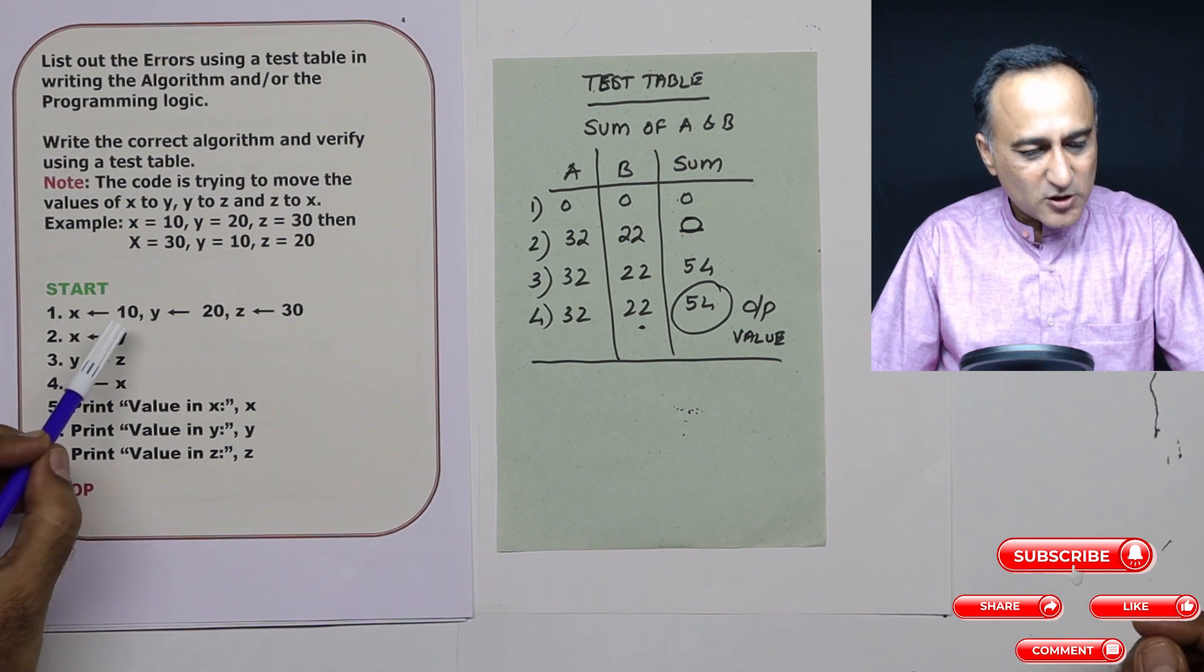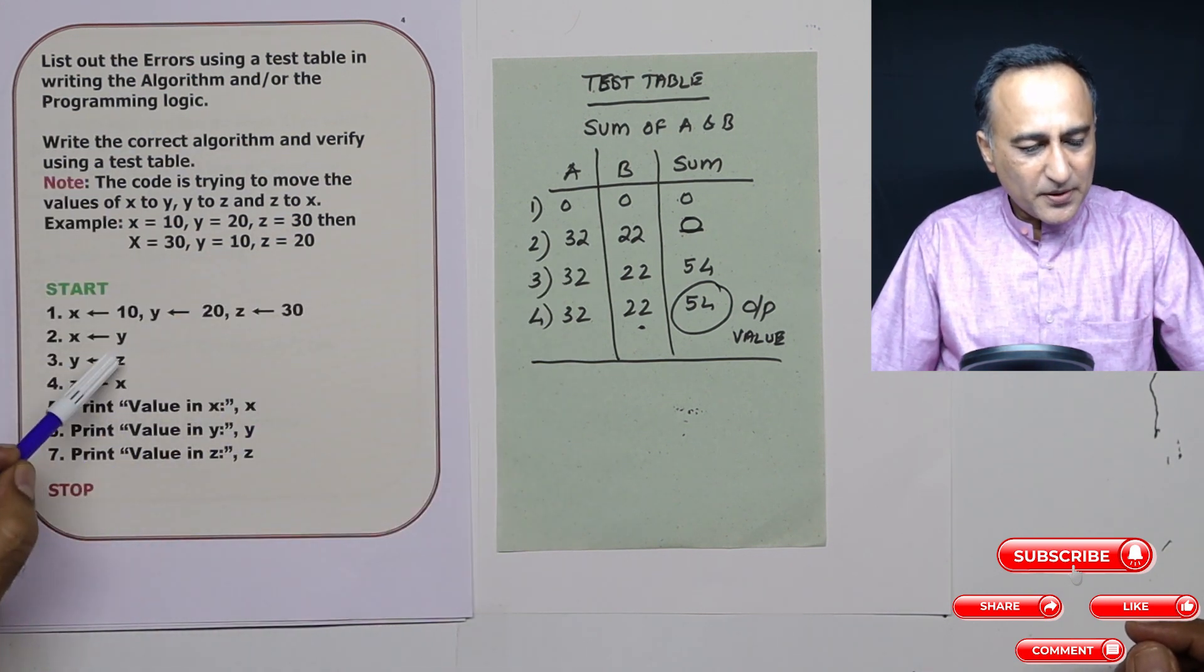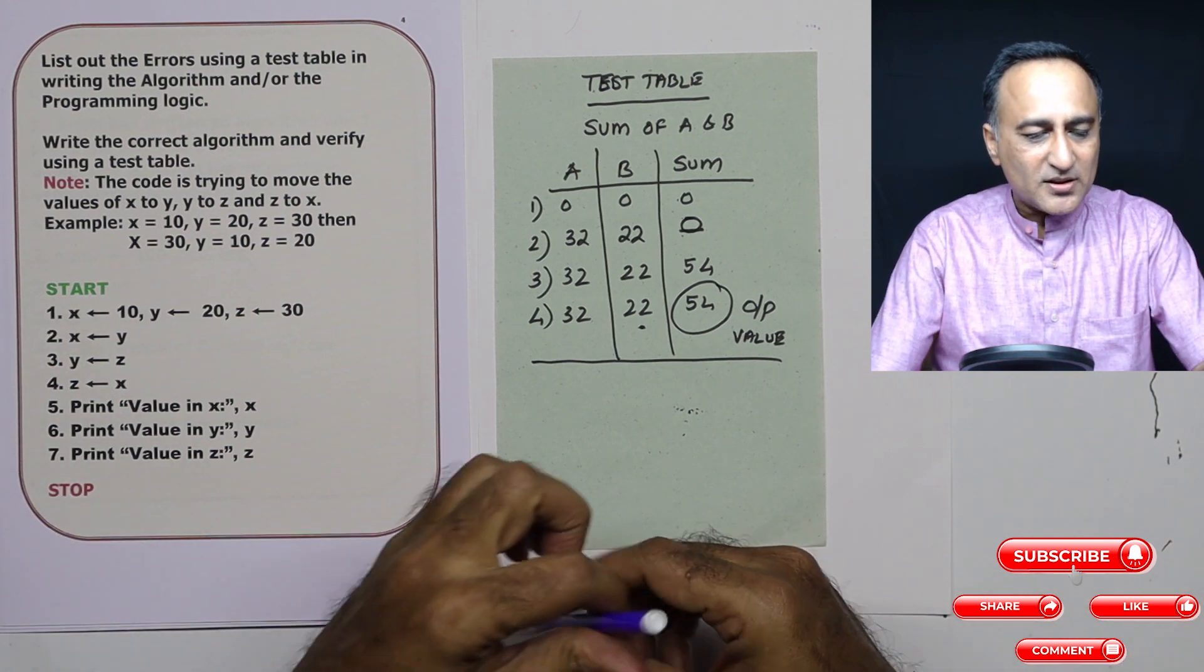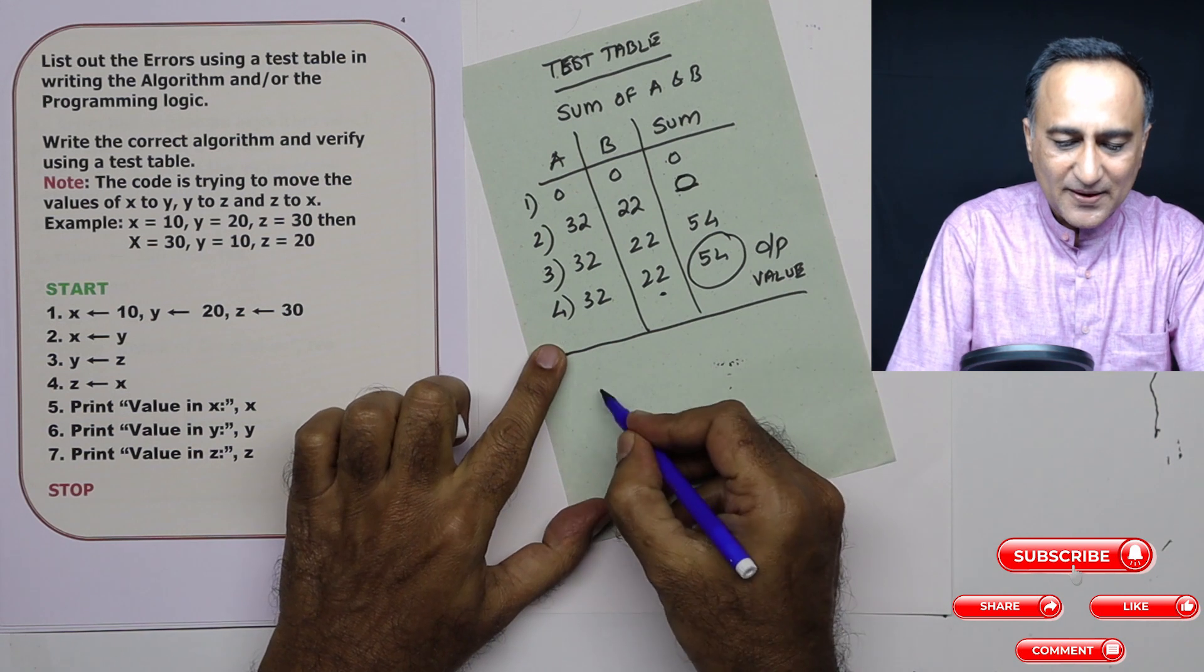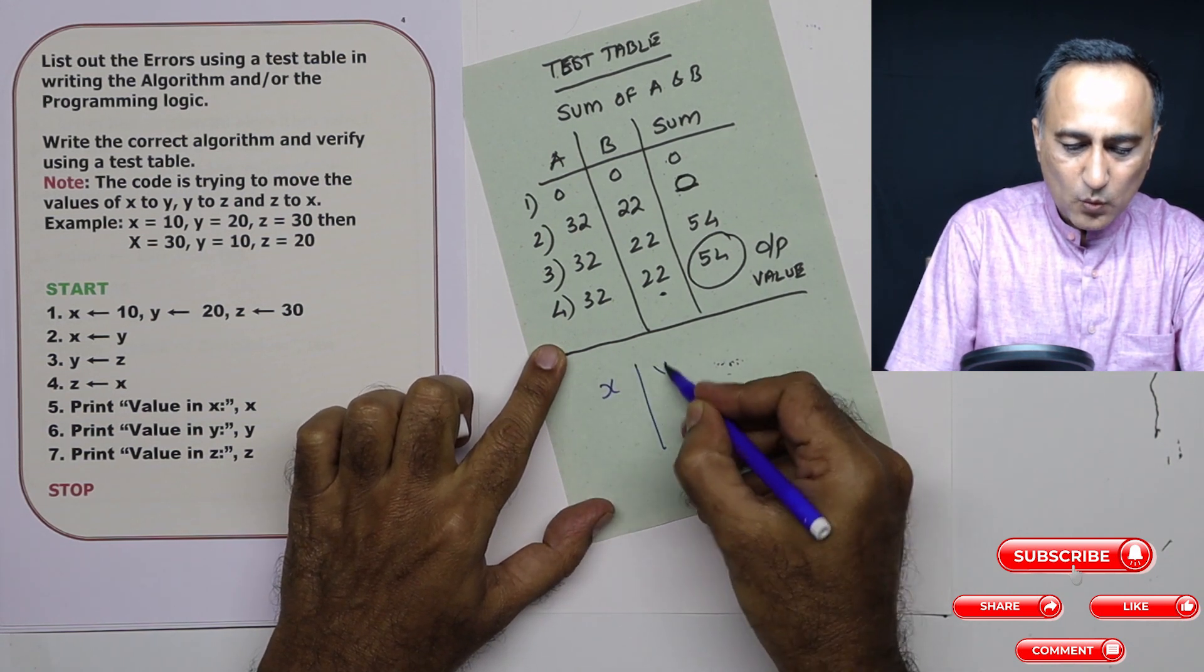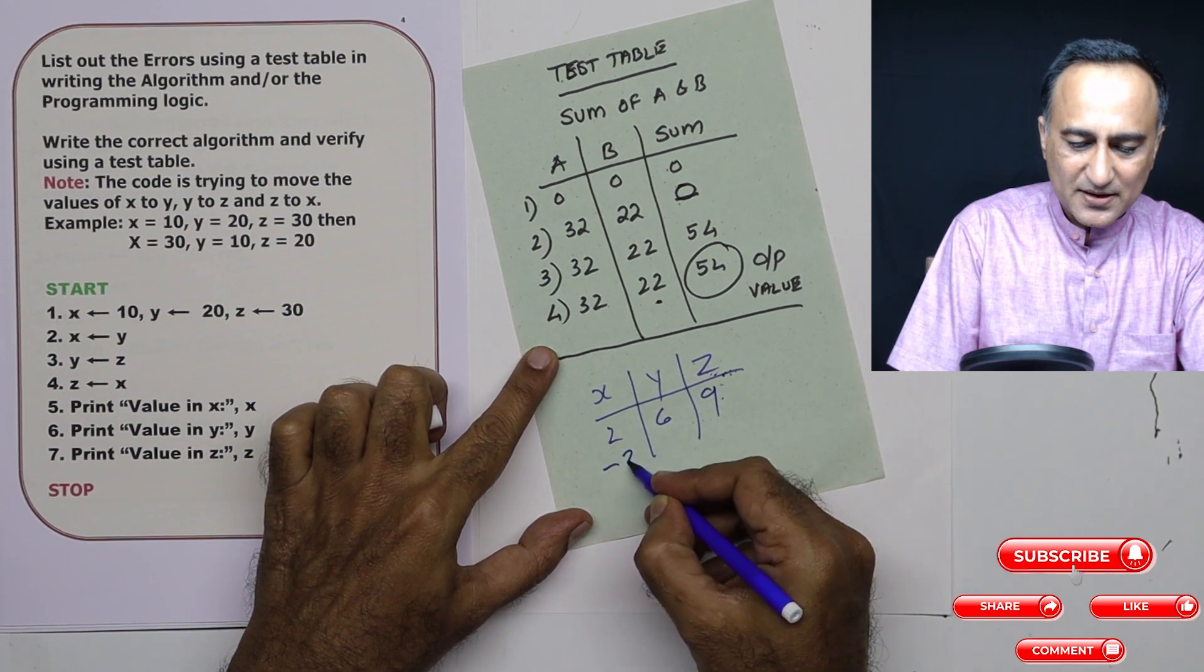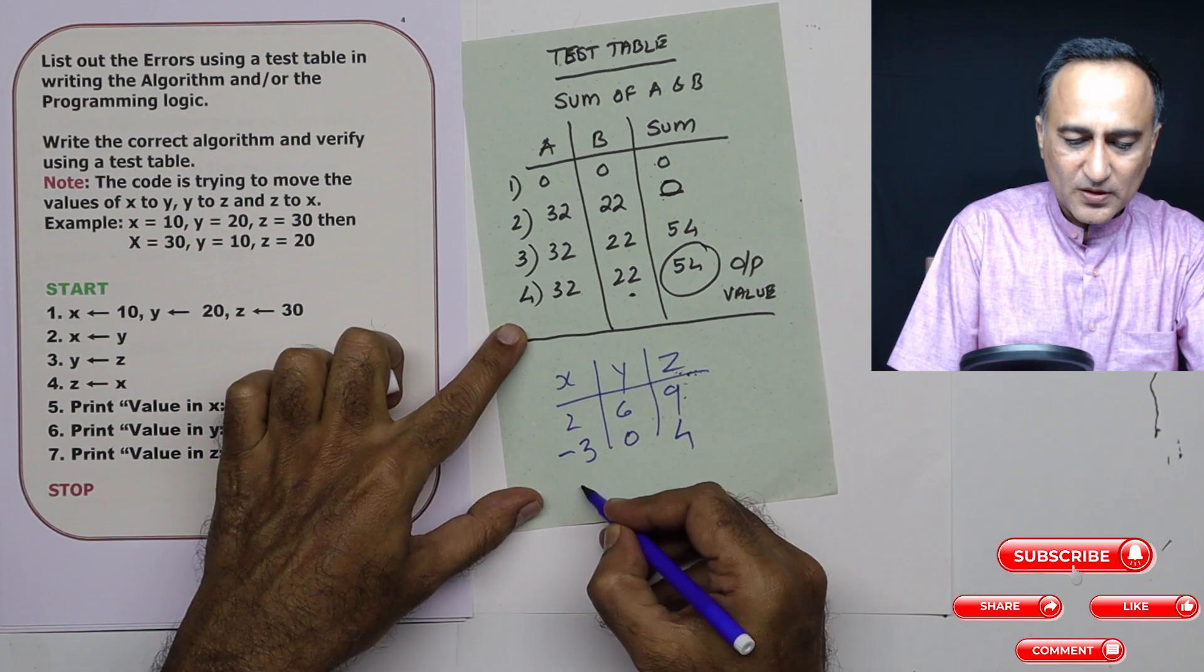First using this logic, create a test table and predict what will be the output of this particular algorithm for three, four different values. You can take x, y and z and you can take the values 2, 6, 9 minus 3, 0, 4.